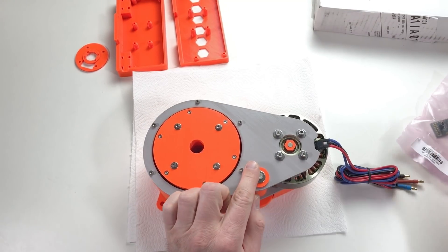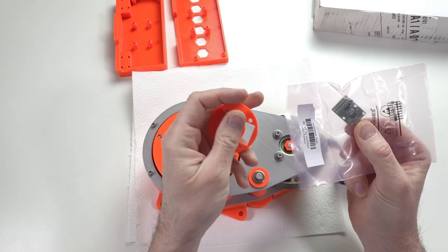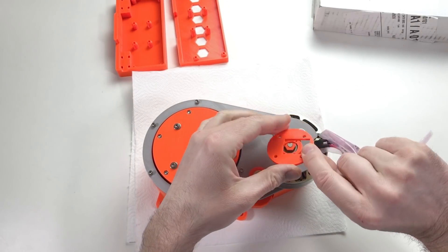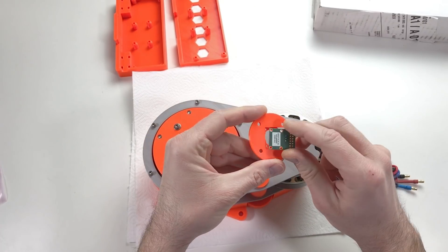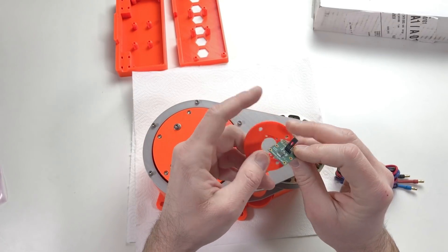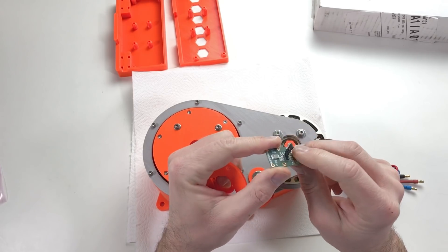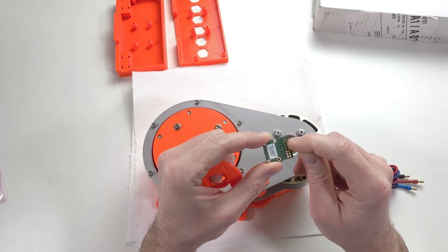Now we will mount encoder itself. So this encoder is going to be fixed on this plate. And afterwards this plate goes here. So encoder goes like this but I need to unsolder these pins and also solder the wires to the encoder.